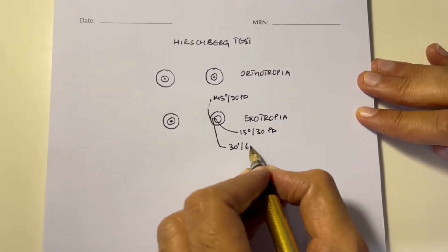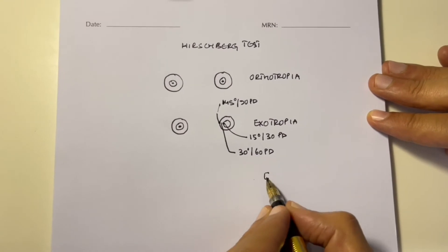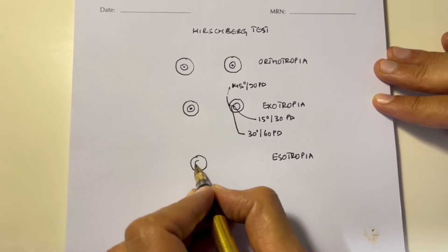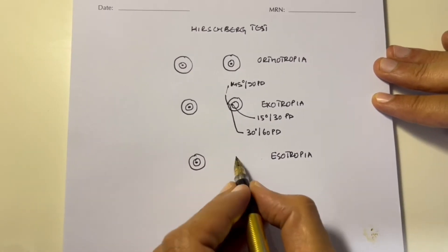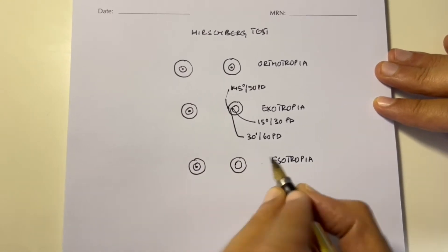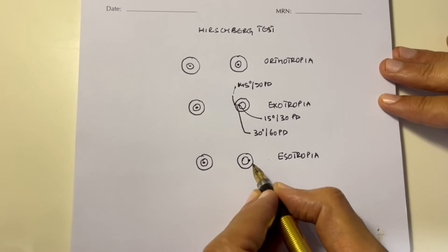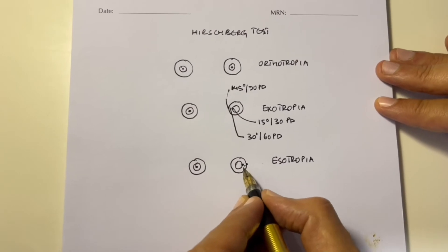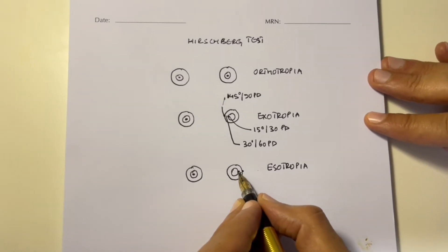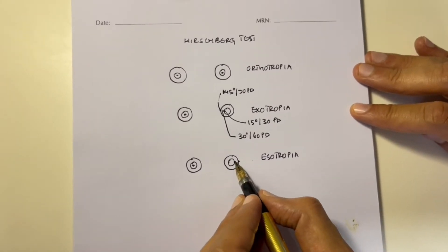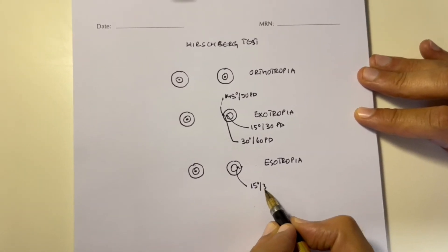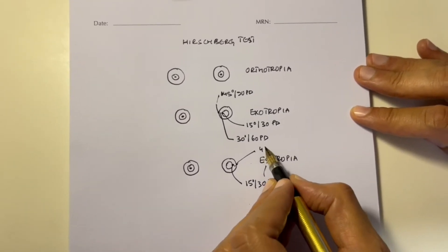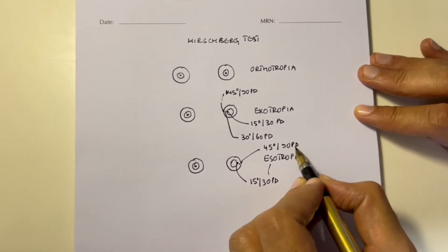In patients with an esotropia, one eye shows the light reflex coming from the center of the pupil, while in the other eye you would see a light reflex coming from the temporal pupil margin, temporal limbus, or in between the temporal limbus and pupil margin. If coming from the pupil margin, that is 15 degrees or 30 prism diopters of esotropia; from the limbus, it is 45 degrees or 90 prism diopters; and in between the two, it is 30 degrees or 60 prism diopters of esotropia.